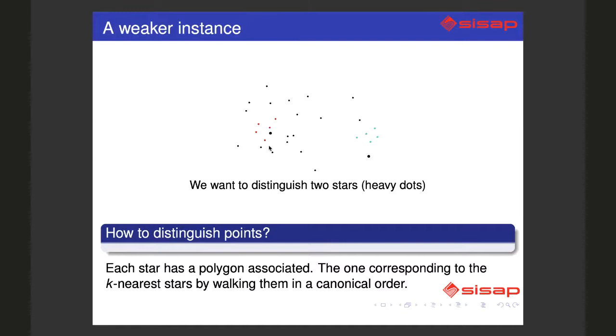Here we have the five nearest neighbors of the left heavy point and the right heavy point. We can walk them by walking from the center to the nearest star, and then from there to the nearest one, to the nearest one, and repeat until we complete.